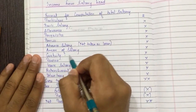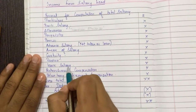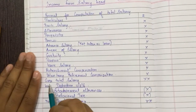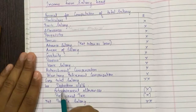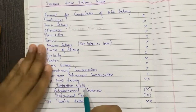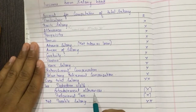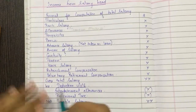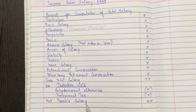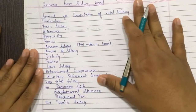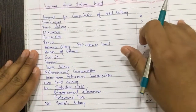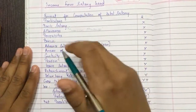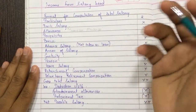Arrears of salary, gratuity, pension, leave salary, retrenchment compensation, and voluntary retirement compensation all go into gross total salary. Then we get the deduction under Section 16 — entertainment allowances, if received, and professional tax — giving us the net taxable salary. This is the basic format for computation of total salary.